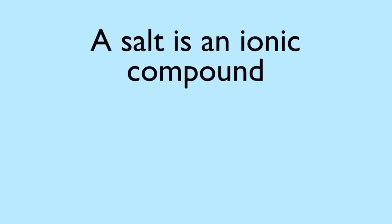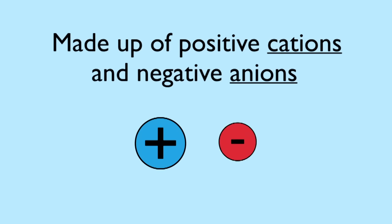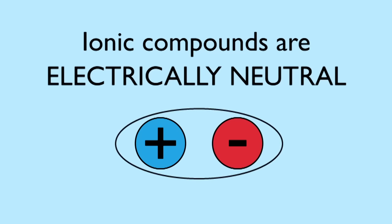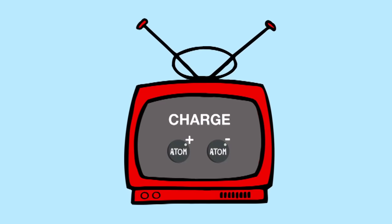Let's start with what a salt is. It's an ionic compound made up of one or more positively charged cations and negatively charged anions. An ionic compound is electrically neutral. Watch this video if you'd like a refresher on this concept.